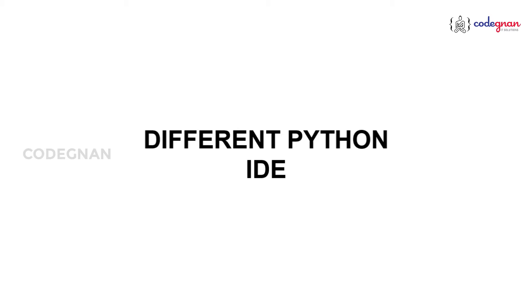Now let's understand how we are going to use Python. First, you should have software in your system. With Python, even if you are a Mac user or a Windows user, Mac users will default to Python 2, and with newer Mac OS you may have Python 3. IDE stands for Integrated Development Environment, where you run applications — and we have different Python IDEs.